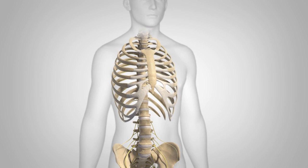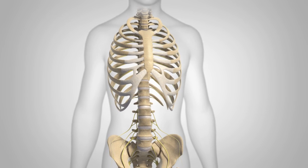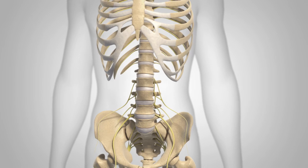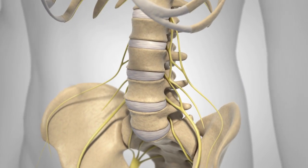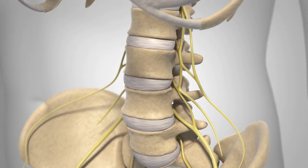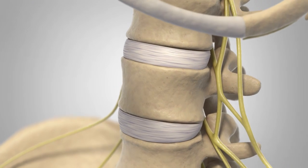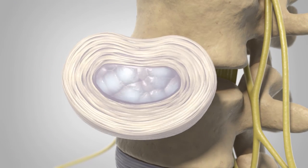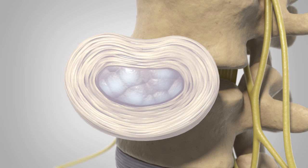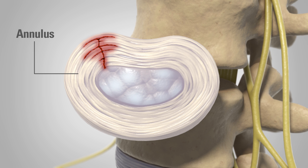Lumbar Degenerative Disc Disease, or DDD, is defined simply as the wear and tear of intervertebral discs that act as cushions for the spine. This wear and tear may result from normal aging, or may be due to long-standing trauma. DDD typically begins with tears in the outer ring of the disc, or annulus, and can lead to a decrease in the water content of the soft gel center of the disc, or nucleus pulposus.